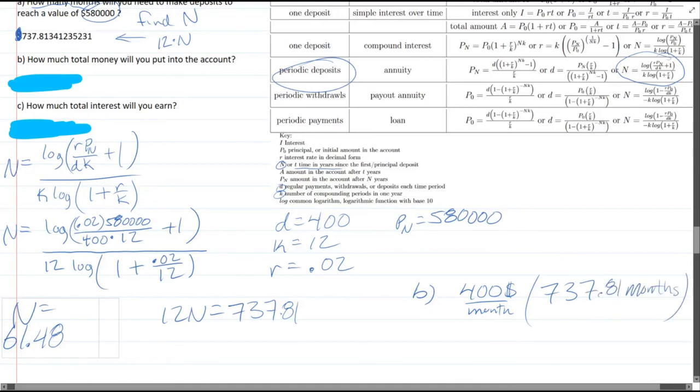What happens here, the month divided by month cancels, and then we just have 400 times 737.81. That's the answer to part B. You can do that on the calculator, that's no problem, just a multiplication.